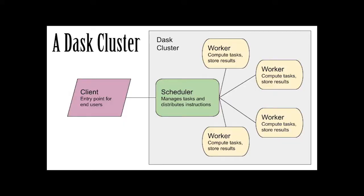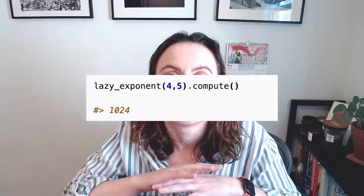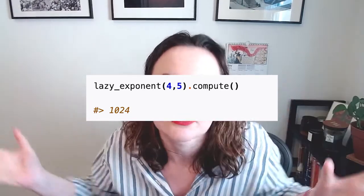If you're not already familiar, a Dask cluster can be architected something like this. A client is where you as the end user will interact with the cluster. The scheduler will manage the tasks that you send to the cluster to distribute them to the workers, which are all different machines of sizes that you can decide, and they will run computations in parallel. And then you can instruct Dask at the correct time to start computing all of those things at once.